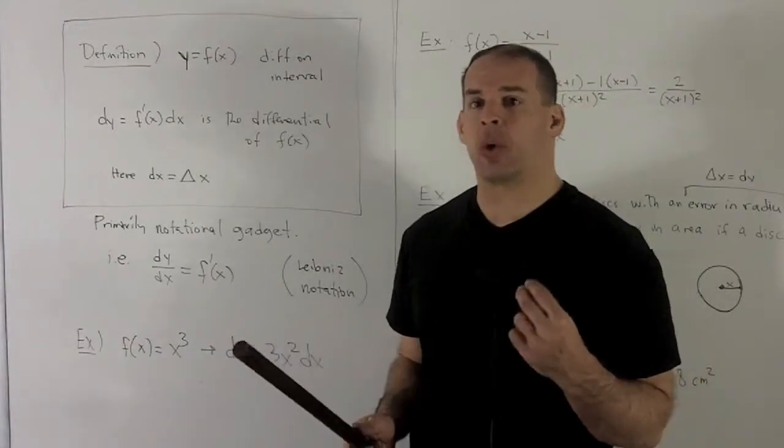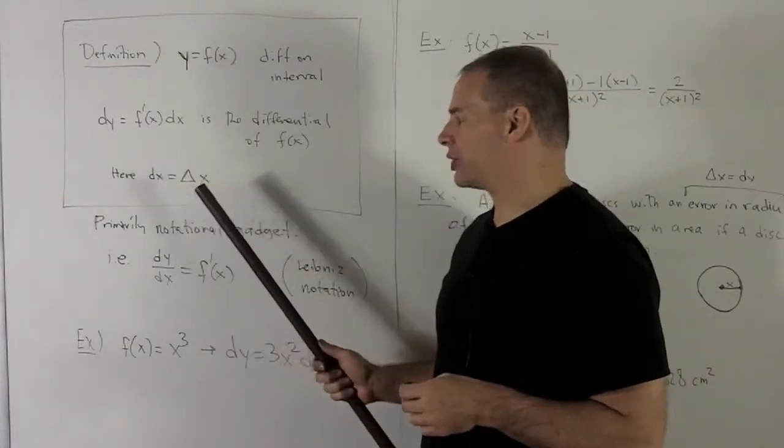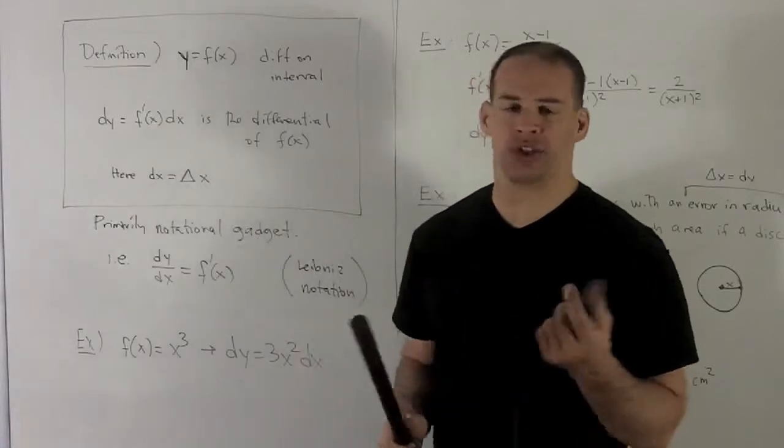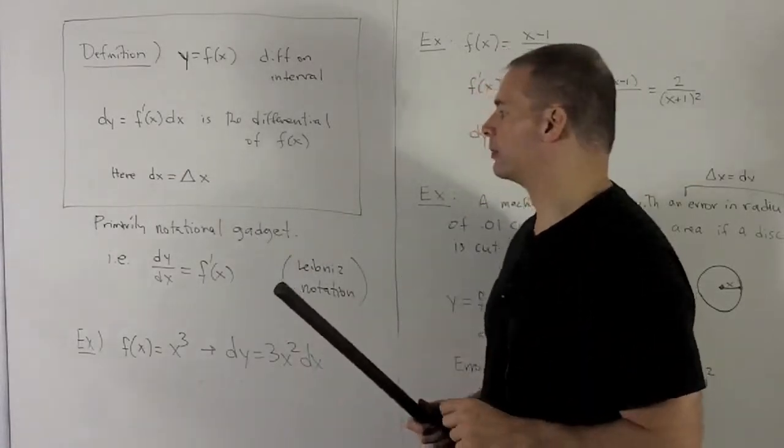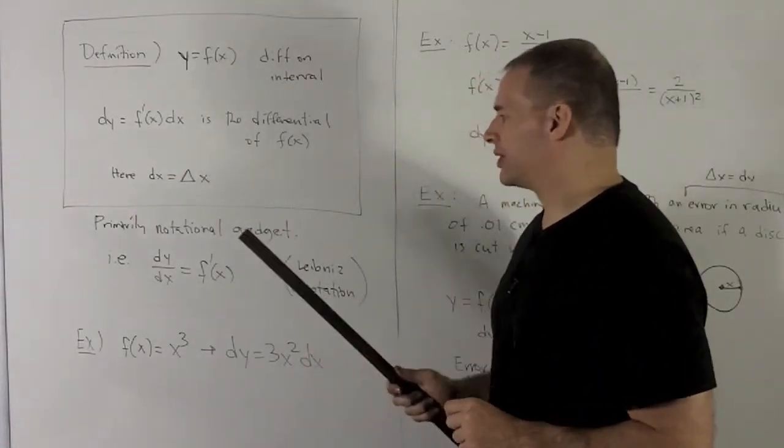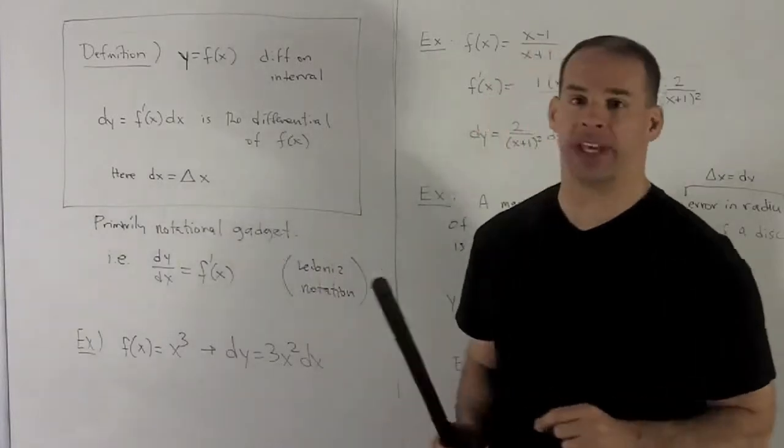If I'm trying to estimate quantities, then dx is going to be the same as delta x, where delta x is just your change in x. Otherwise, this thing is going to be primarily a notational gadget.